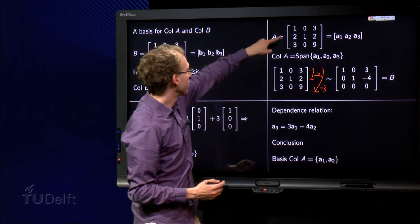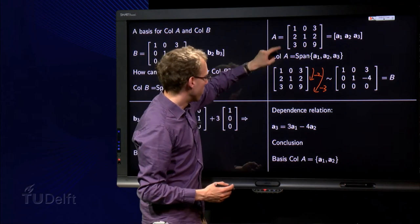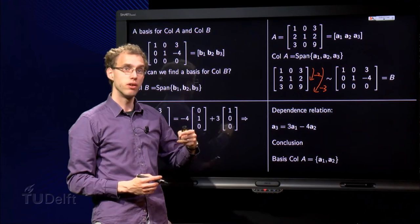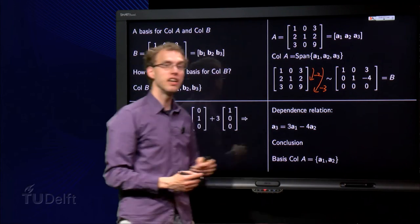Just check: 3 times a₁ is [3, 6, 9] minus 4 times a₂, minus [0, 4, 0], equals [3, 2, 9]. Indeed, that is a₃.